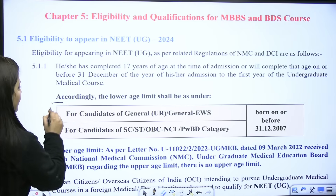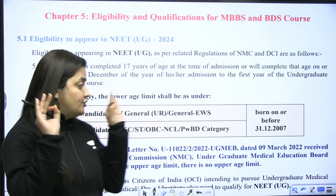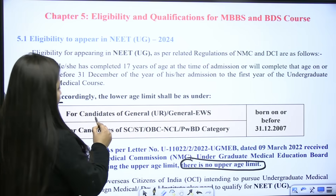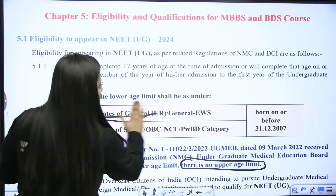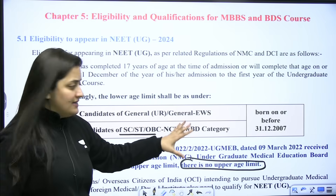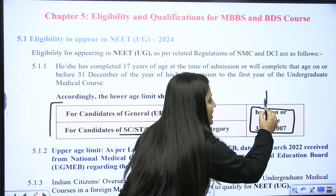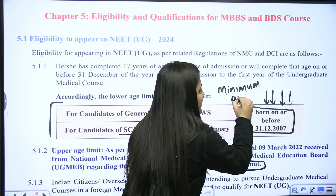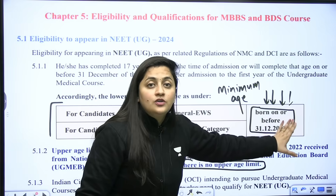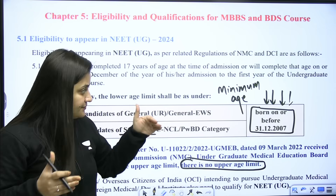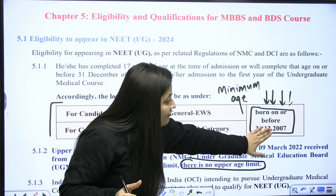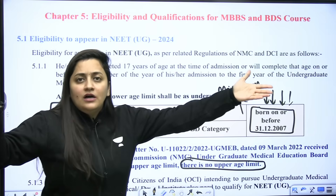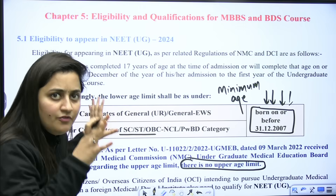Regarding eligibility criteria — there is no upper age limit. For the lower age limit, for general, EWS, SC, ST, OBC NCL, and PwD candidates, you must be born on or before 31/12/2007. If you are born after December 2007 — basically in 2008 — you are not eligible for this exam this particular year.